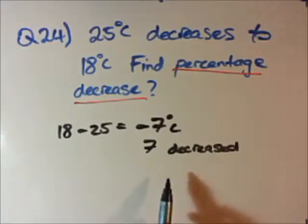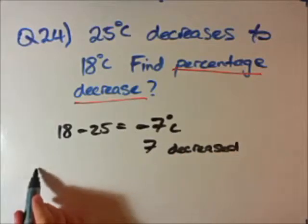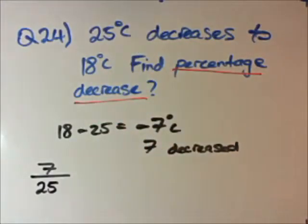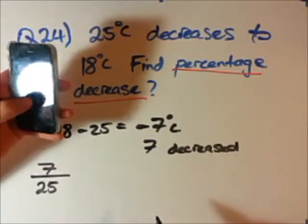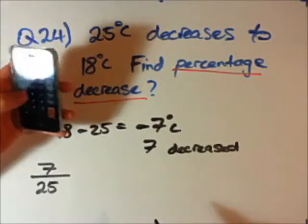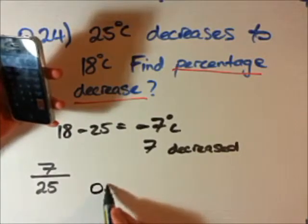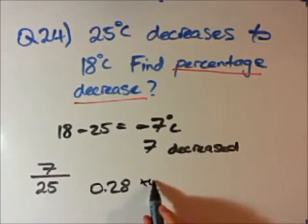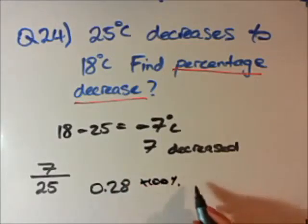Now the final step to find the percentage decrease: take the change of 7 degrees and divide by the original amount, which is 25. We need to convert this fraction into a decimal. Using a calculator, 7 divided by 25 gives 0.28. We then convert the decimal into a percentage by multiplying by 100, giving us 28 percent.